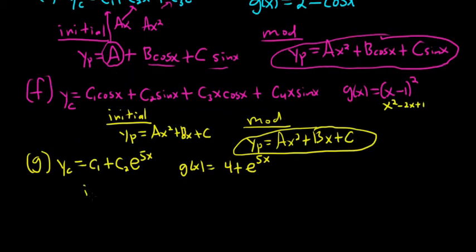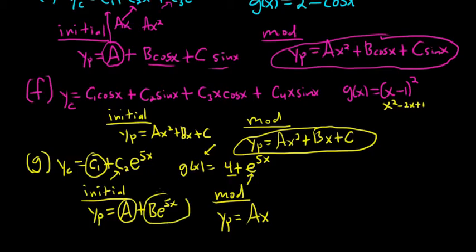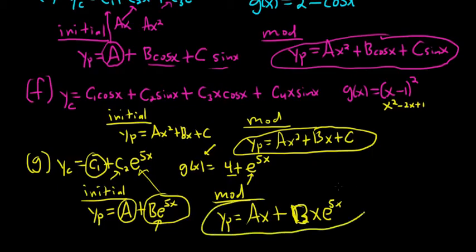We'll do our initial — looking only at the right-hand side. The 4 gives us constant A, and the exponential gives us plus B e to the 5x. Now for the modified, we look at our initial and the terms of Yc. A repeats with C1, so we have Ax. And B e to the 5x repeats with C2 e to the 5x, so we put an x on that one too: Bx e to the 5x. So our modified is Ax plus Bx e to the 5x.